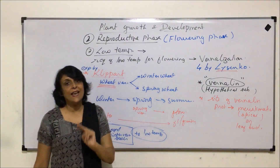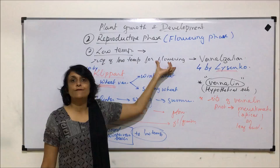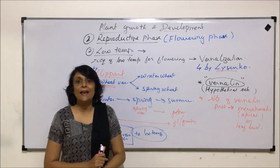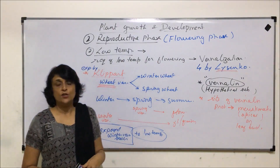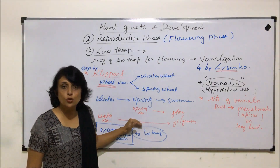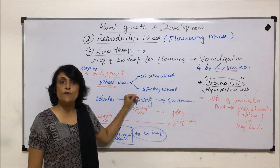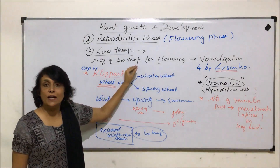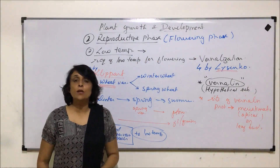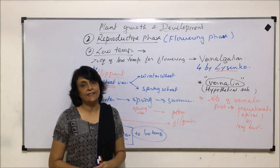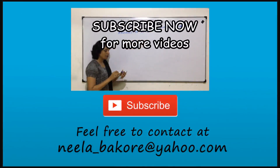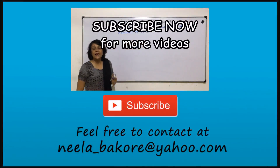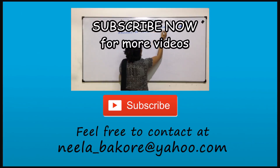After the second phase — that is the flowering or reproductive phase — the plant goes into the third phase, which is senescence and death. So after germination as the first phase, then vegetative growth, then the reproductive phase, now let us talk about senescence and death.